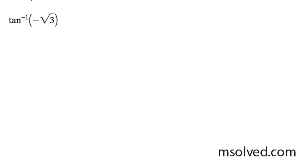The inverse tangent of negative root 3. I can rewrite this as inverse tangent of negative root 3 equals x. And because we've got the inverse tangent here, our bounds are going to be negative pi over 2 to pi over 2.